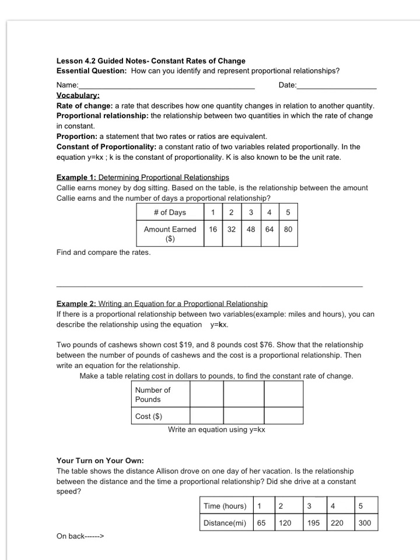And then our last one, probably the most complex, is the constant of proportionality, which is a constant ratio of two variables that are related proportionally. In this equation, y equals kx, the variable k is the constant of proportionality. And k is also known as the unit rate, which is what we are now comfortable in finding.